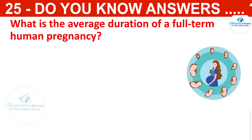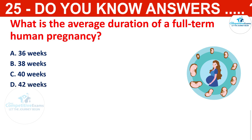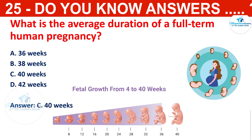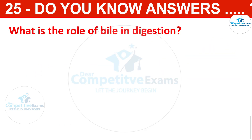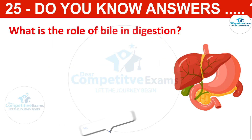What is the average duration of a full-term human pregnancy? The options are 36 weeks, 38 weeks, 40 weeks, or 42 weeks. The correct answer is 40 weeks. The average duration of a full-term human pregnancy is around 40 weeks, calculated from the first day of the last menstrual period.